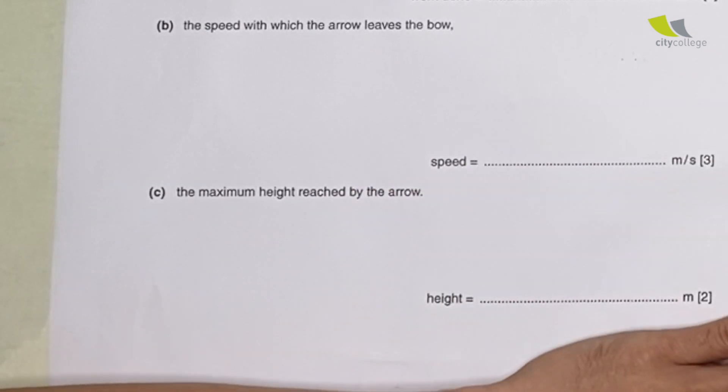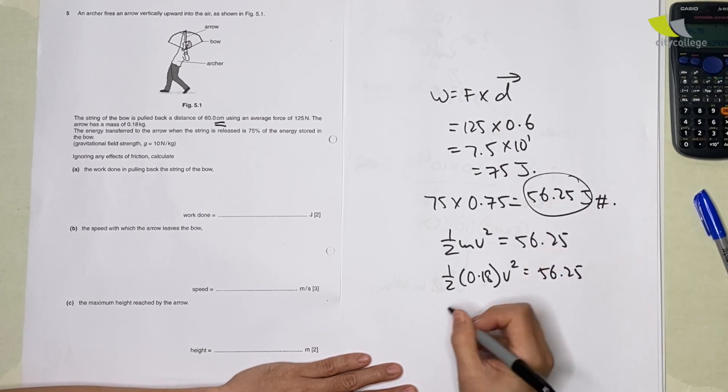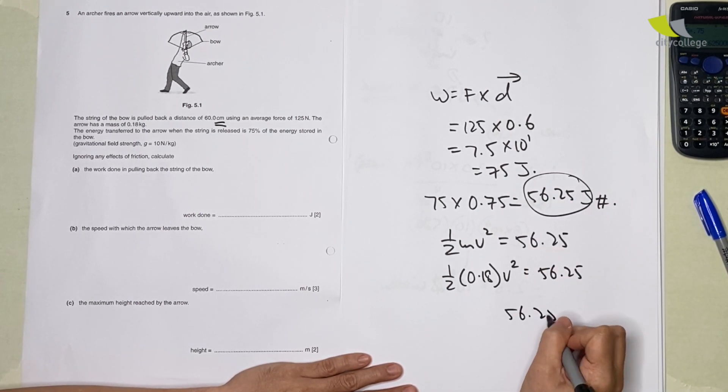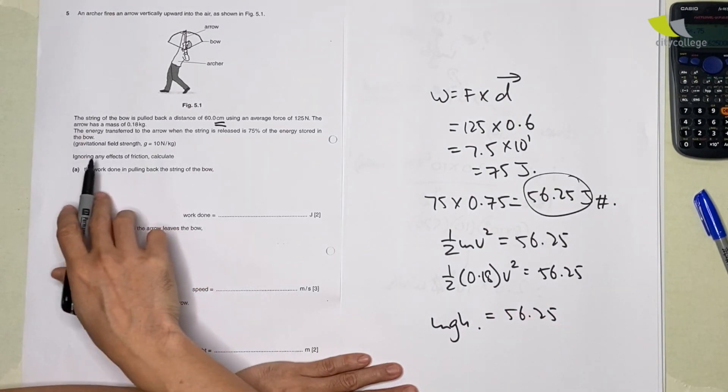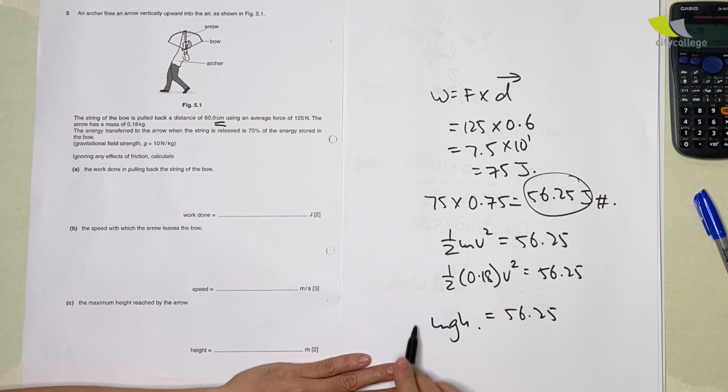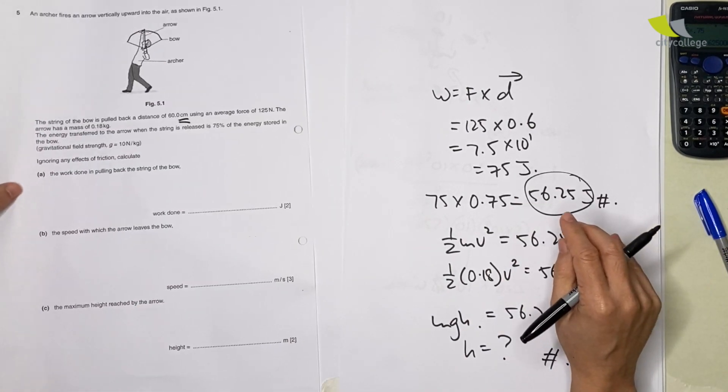Maximum height reached by the arrow: what you do is you equate your 56.25 with mgh, then you substitute for your mass inside, which is 0.18, g is 10, and then you solve for what is h, and you will solve as well.